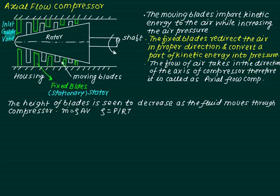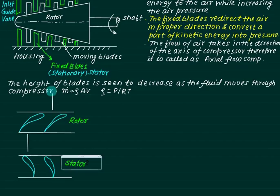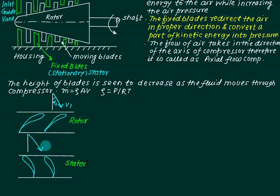An extra fixed blade called the inlet guide vane is placed to guide the air at the correct angles onto the first row of moving blades. We assume the flow takes place at the mean blade height, where the blade peripheral velocity at inlet and outlet are the same, and no flow takes place in the radial direction. The inlet absolute velocity is V1 at angle alpha 1 from the vertical direction. It passes through the rotor and leaves at absolute velocity V2 at angle alpha 2.